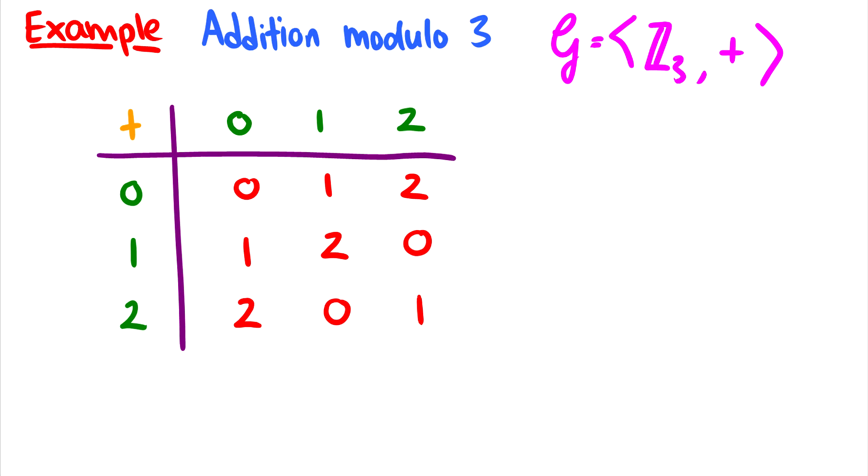So one example of a group is addition modulo 3. In other words, the remainder of a number if you were to divide it by 3. So if we take 2 and we add 2 together, we get 4, we take the remainder, we get 1 back. That's how I'm going to explain it. If you want to know more about modulos, check out a discrete math course.